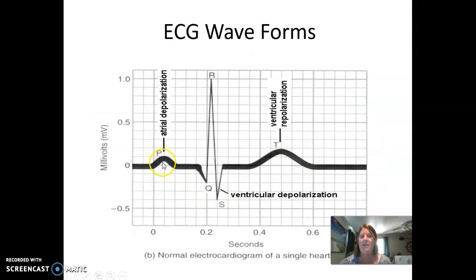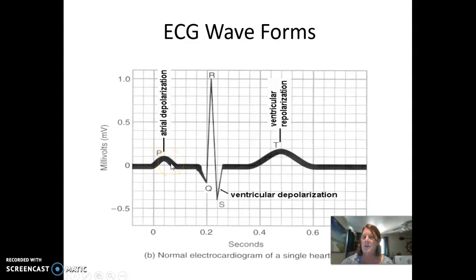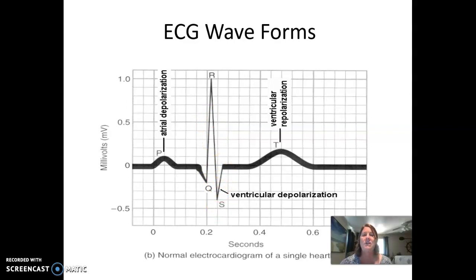Reviewing our waveforms: we have the P wave, which represents atrial depolarization — the atria got the message. If the P wave is normal, rounded, and symmetrical, we know it came from the sinus node. Then there is a hold in the AV node — hopefully when the atria are actually contracting. Then the impulse travels through the ventricles, giving us our QRS complex, which is ventricular depolarization. Ventricular repolarization begins with what should be a flat ST segment and then goes into the T wave.